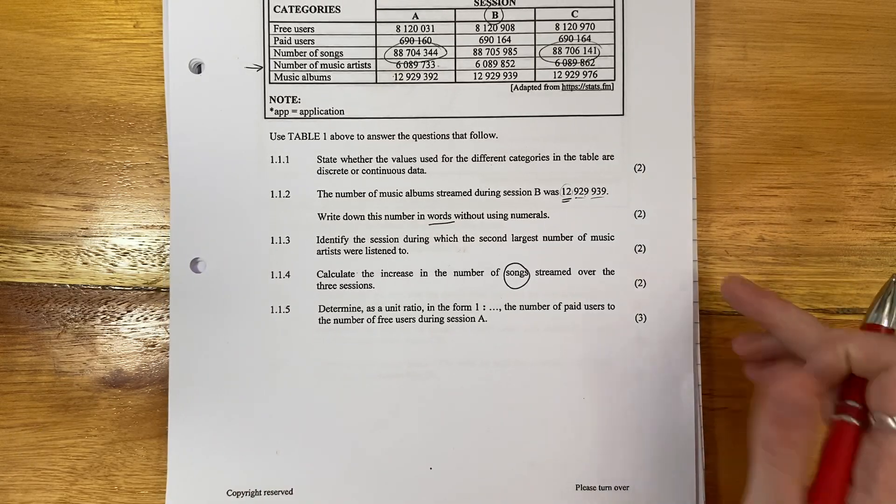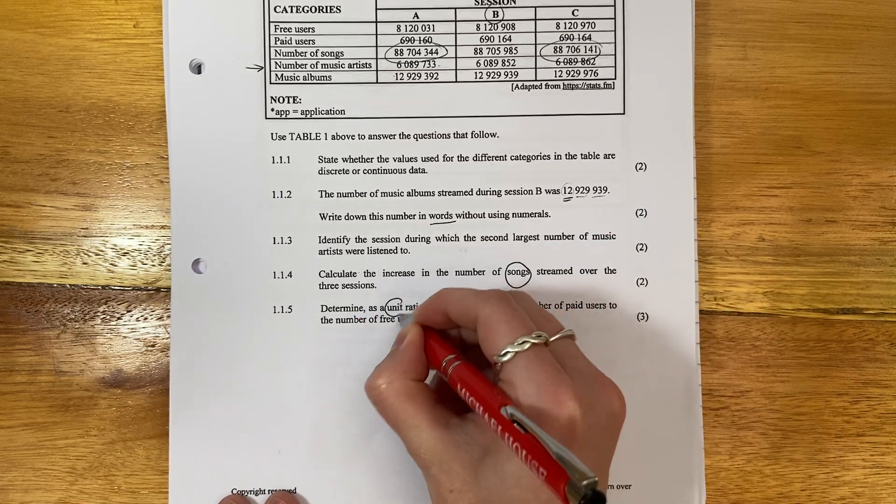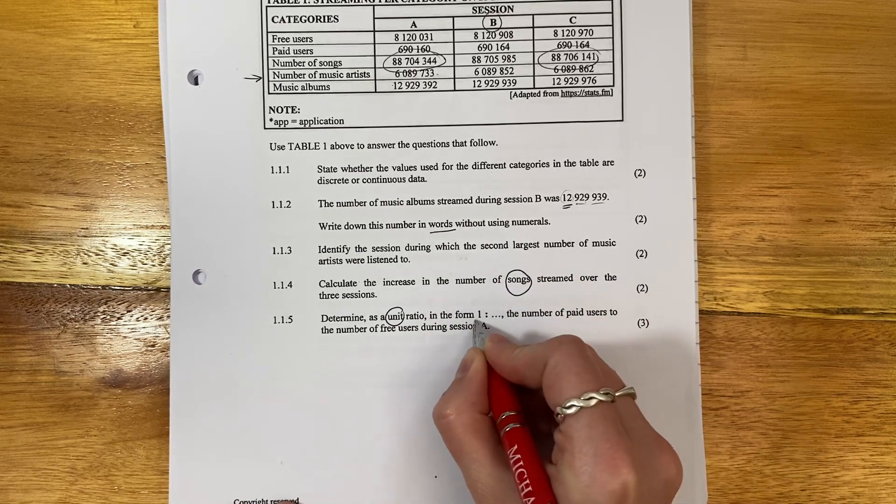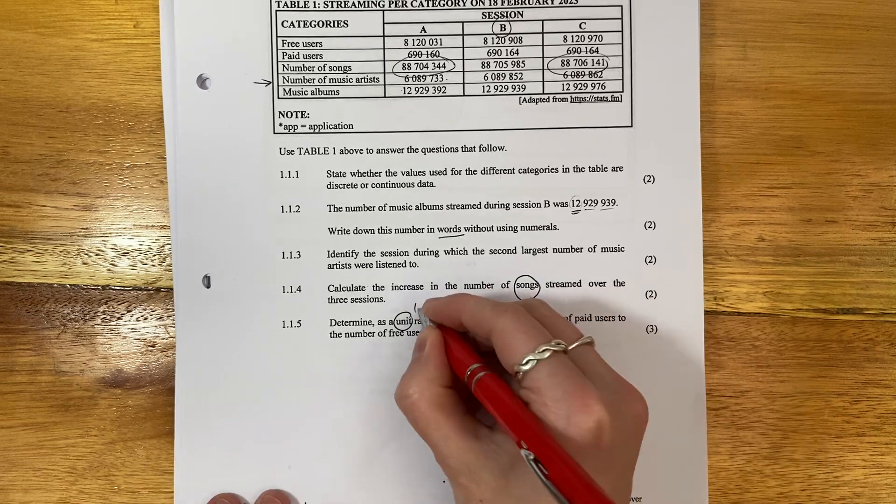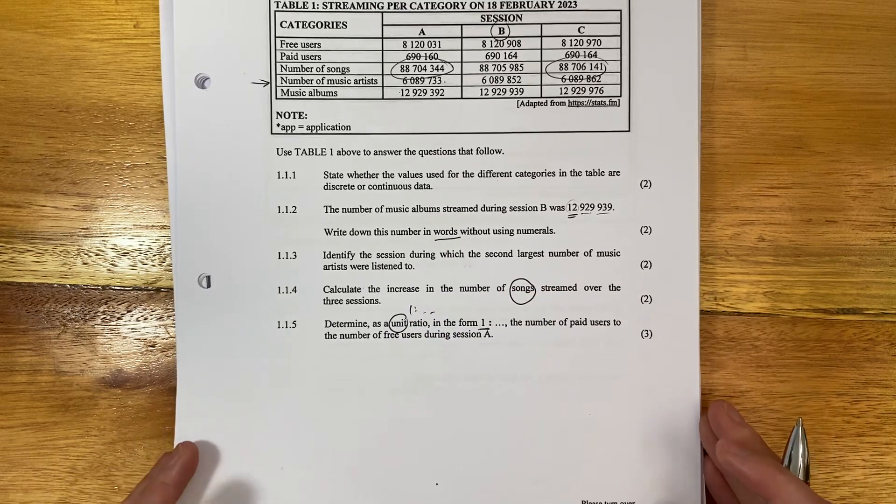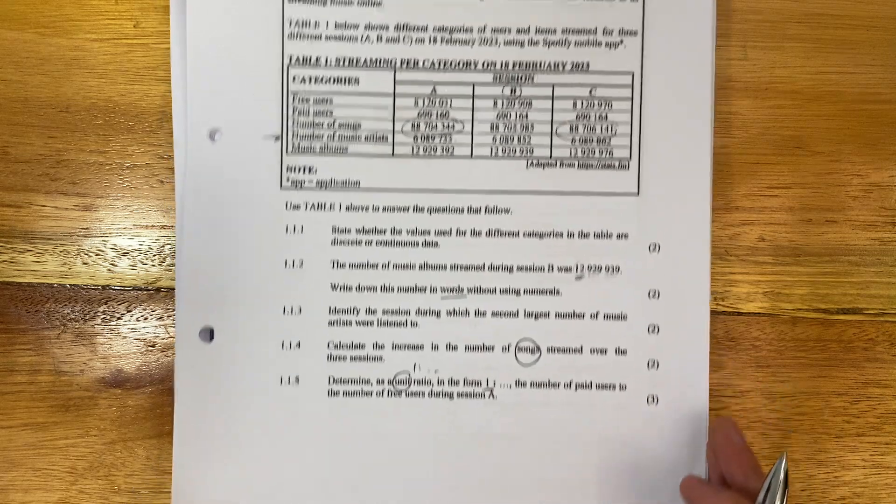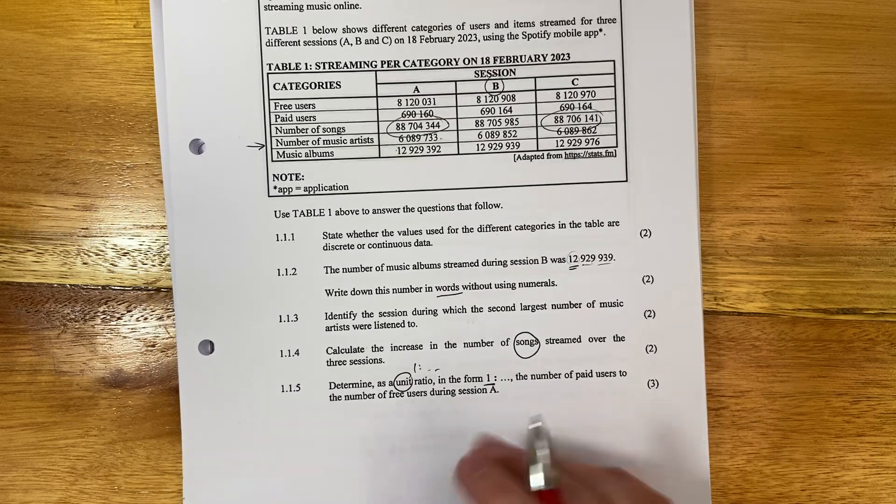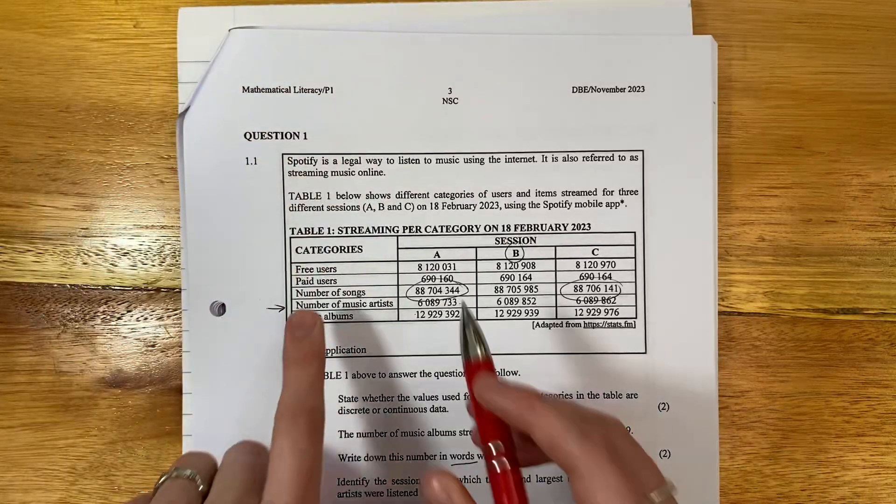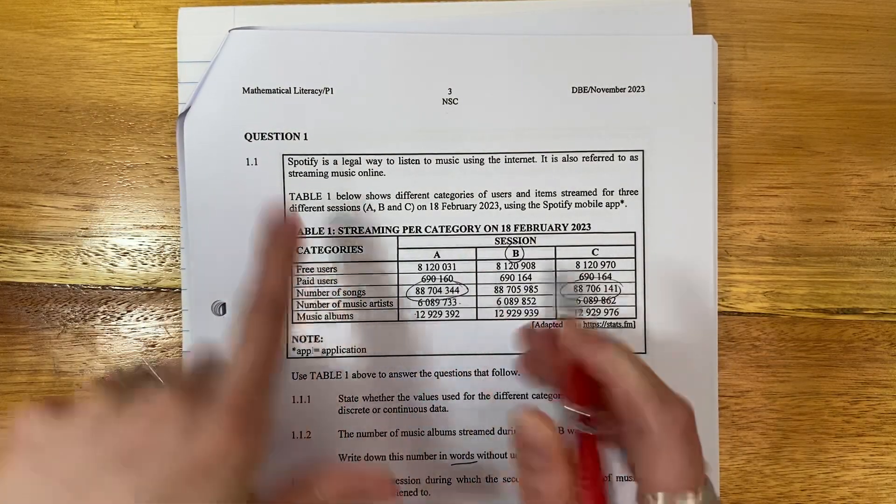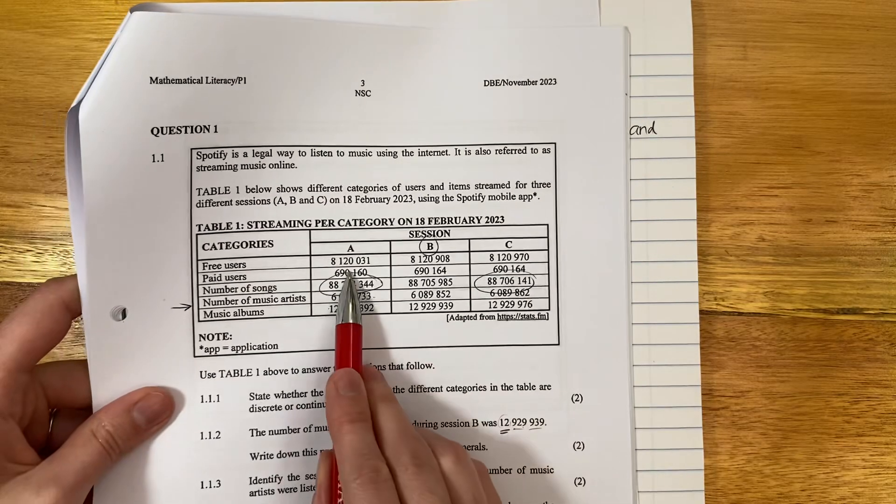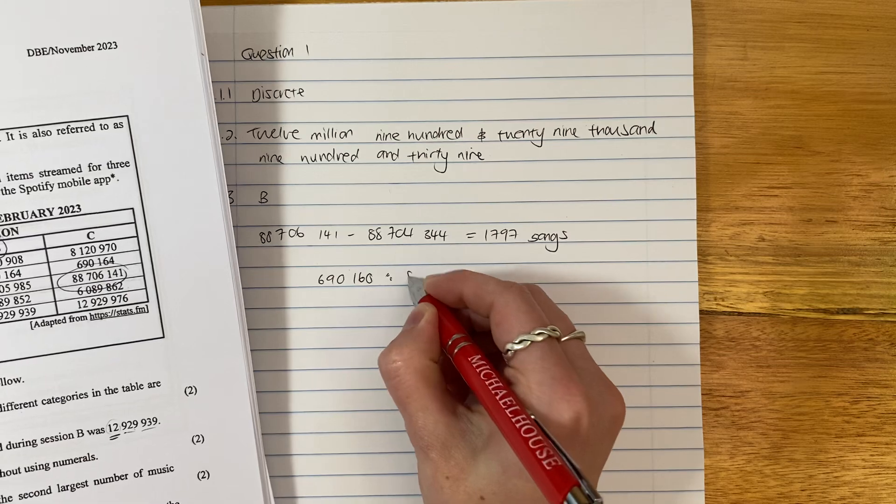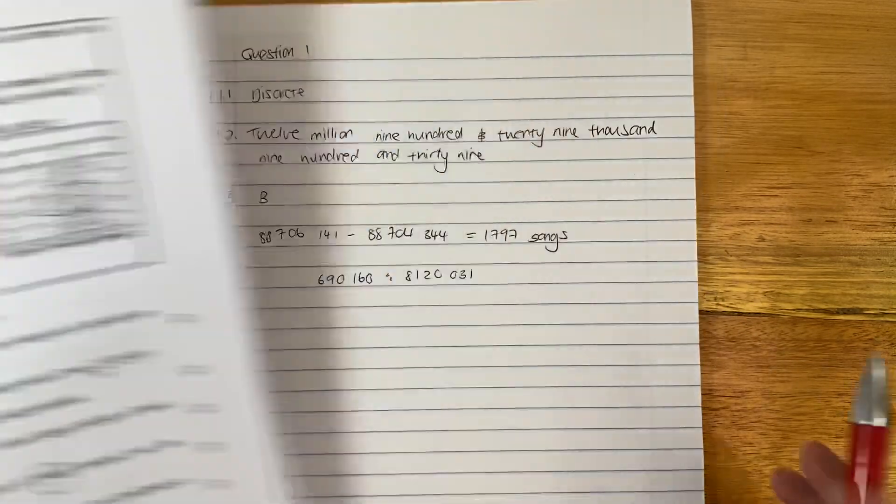Let's look at the last question here. Determine as a unit ratio. A unit ratio means in the form one to something. They didn't even have to put in this little bit here. You should know that a unit ratio is always one to something. The number of paid users to the number of free users during session A. So let's go look. There's paid users. There are free users in session A. So let's write that. So 690160, that's from there, to 8120031. Paid to free. Wonderful.